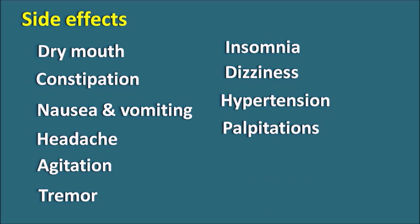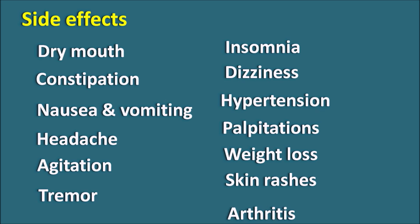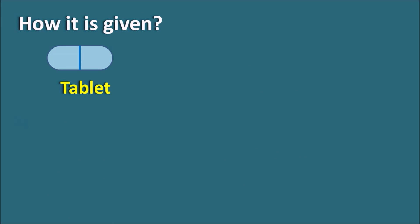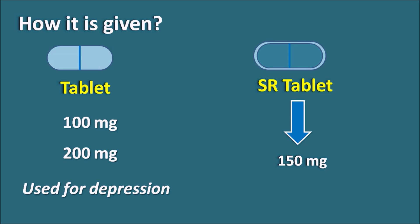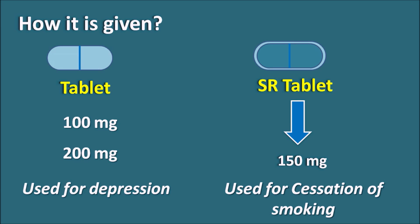Bupropion can also increase blood pressure causing hypertension, though in some patients it may reduce blood pressure. Palpitations — awareness of the heartbeat — can also be observed. Skin rashes and arthritis may occur in patients with allergic reactions. The drug can also produce sedation. Bupropion is available as 100 mg and 200 mg tablets for treatment of depression, and also as a 150 mg sustained-release (SR) tablet, which releases the drug slowly over a prolonged period and is used for smoking cessation.